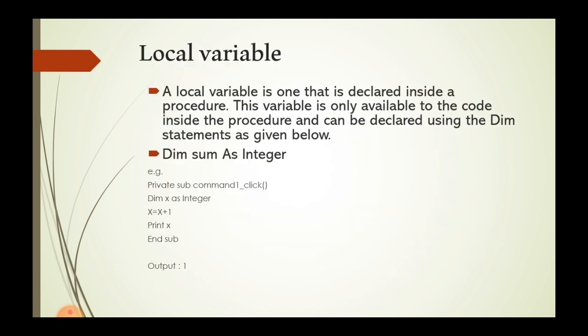A local variable is one declared inside a procedure. It is only available to code inside that procedure and can be declared using the Dim statement. For example: Dim sum As Integer — where sum is the variable name and Integer is the data type.